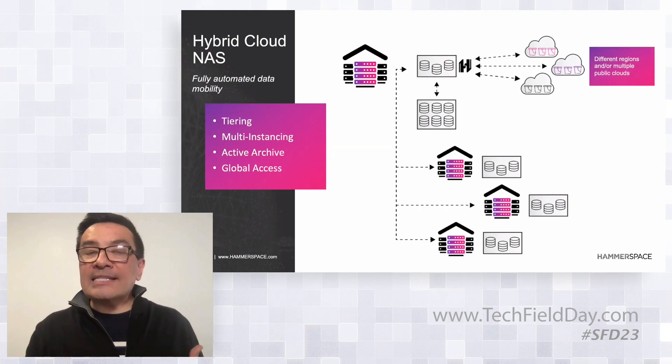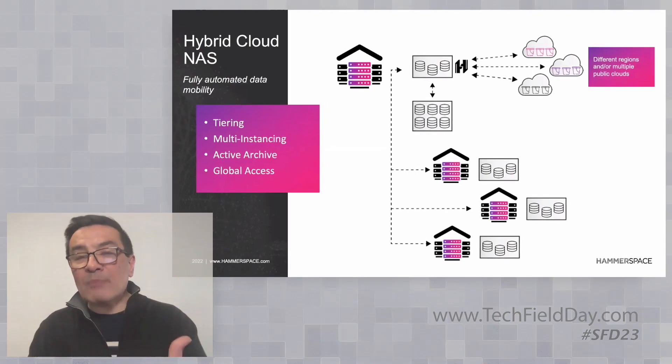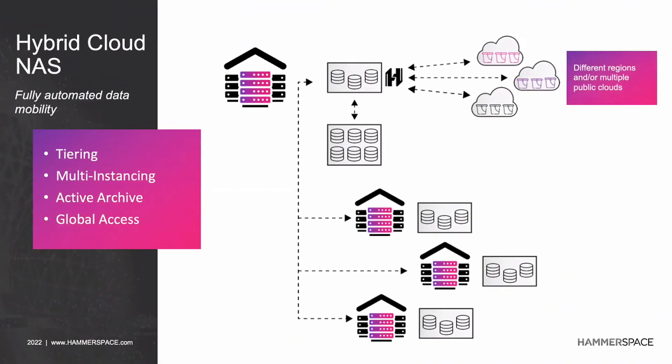Users and applications just know they need to access Hammerspace, and Hammerspace will make sure the data is available to them. If a single part of a region is down, we'll get the data from the closest location where there's another copy. As long as there is another copy of the data somewhere in this environment, we will serve it to the users and applications.